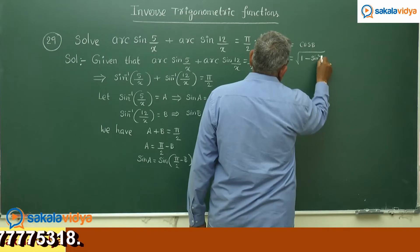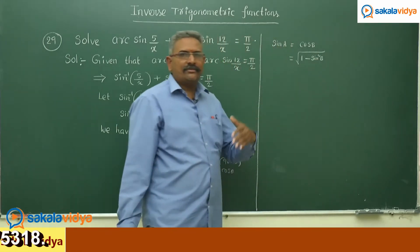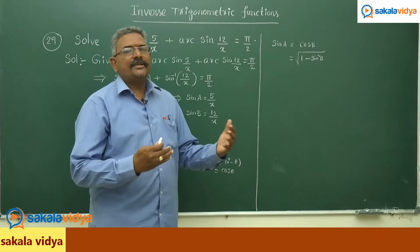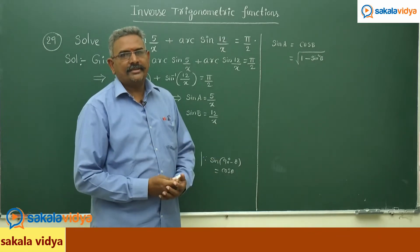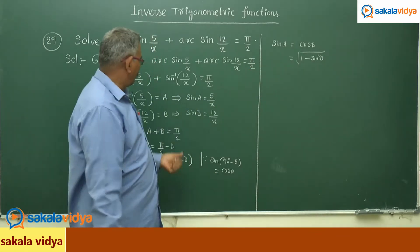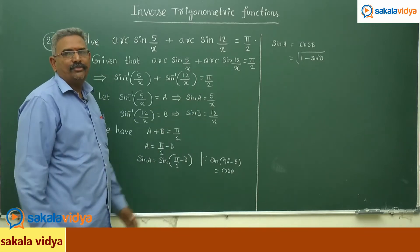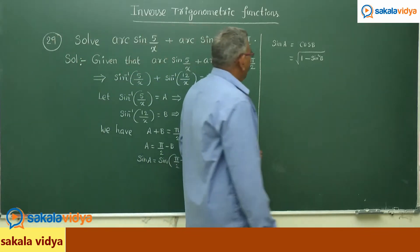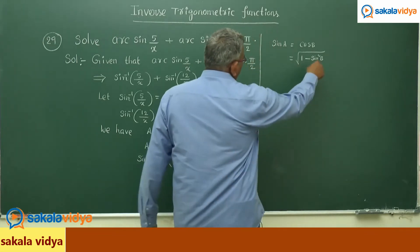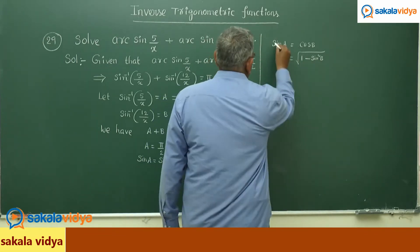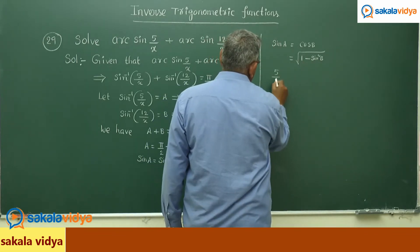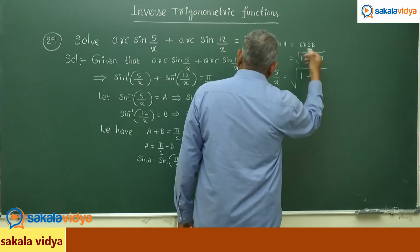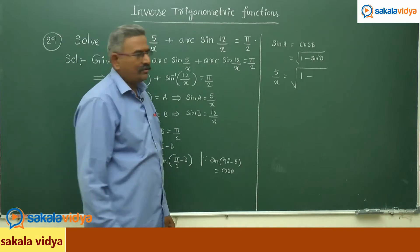We express cos b in terms of sine: cos b equals √(1 − sin²b). We can verify: cos²b + sin²b = 1, so cos²b = 1 − sin²b, and cos b = √(1 − sin²b). We know the values of sine a and sine b, so both are to be replaced. Replacing sine a and sine b: 5/x equals √(1 − sin²b), where sin b = 12/x.